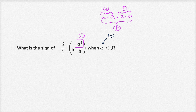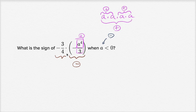But then you have a negative in front: negative a to the fourth over 3. All of that inside the parentheses is positive, but then you put a negative in front, so the whole parenthetical expression is negative. Then you have negative 3-fourths times a negative. A negative times a negative means the whole thing is going to be positive. The sign is positive.